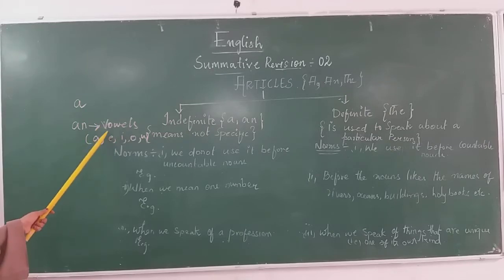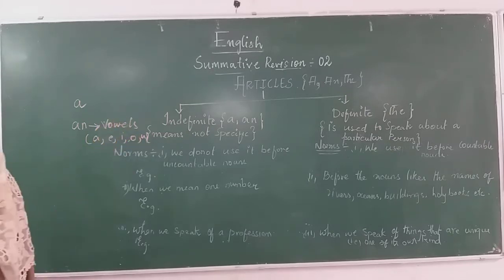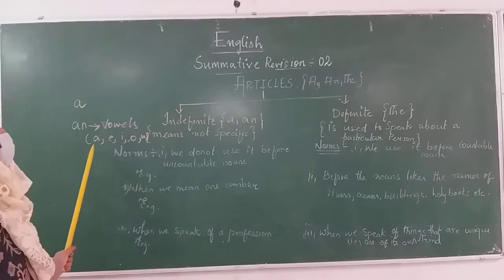What are vowels? Words that start with A, E, I, O, or U are known as vowels.